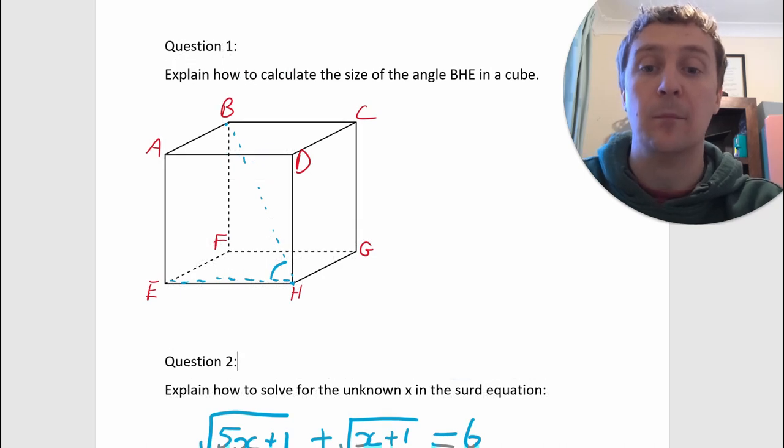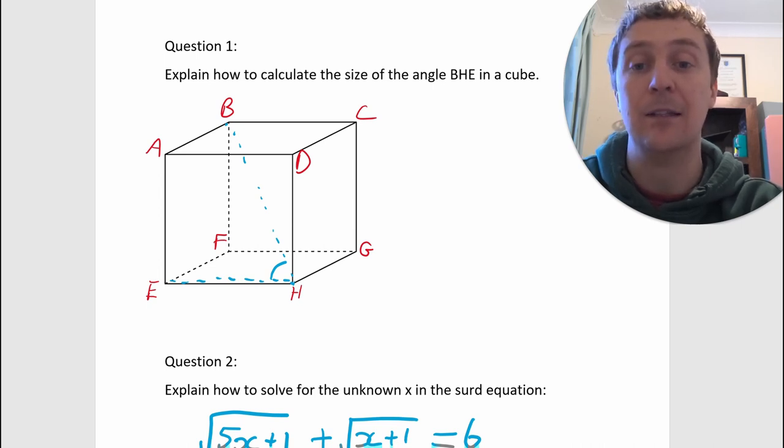So now what I want you to do is to pick either of these two questions. Question one is: explain how to calculate the size of the angle BHE in a cube. That's this angle down here from B down through the center of the cube to H and across the face, the front face of the cube to E. So it's that angle there. It's kind of tilted into the cube.